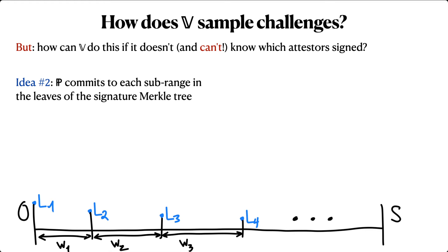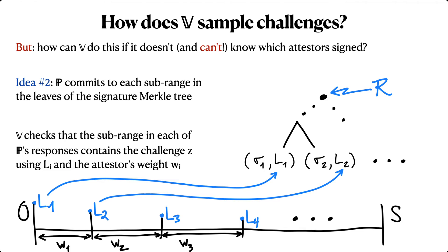Now to generate the signature Merkle tree, the prover commits to both a signature and a sub-range starting point in each leaf of the tree. When the prover opens a leaf in response to a challenge Z, the verifier checks the signature, just as before. But it also checks that the committed range actually covers Z.